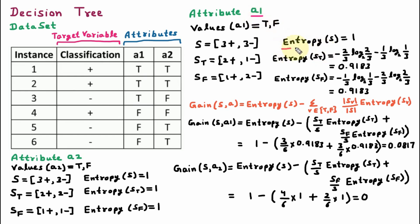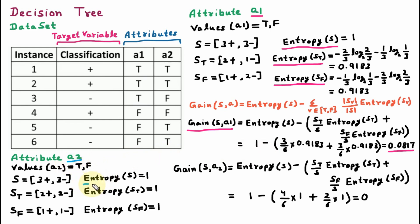So for attribute A1 we have calculated entropy of S, entropy of ST, and entropy of SF with information gain of 0.0817. Similarly for attribute A2 we have calculated entropy of S, entropy of ST, entropy of SF, and the information gain for A2 which is 0.